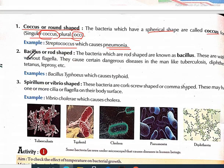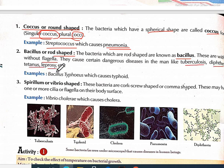Second: bacillus, or rod-shaped bacteria. Bacteria which are rod-shaped are called bacillus. These are without flagella. They cause certain dangerous diseases such as tuberculosis, diphtheria, tetanus, and leprosy. You can see how dangerous this type of bacteria is. Here you can see tuberculosis — rod-shaped bacteria, called bacillus.